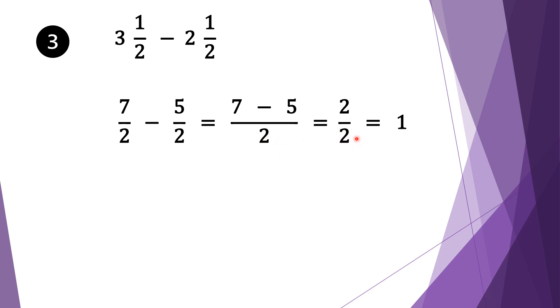Seven take away five is two, and we bring two down. Top and bottom are both divisible by two: two goes into two once, and two goes into two once. Our final solution is one.